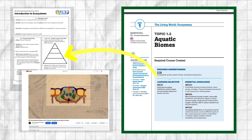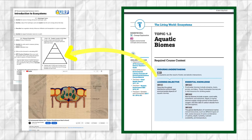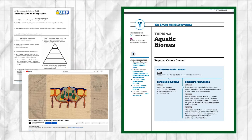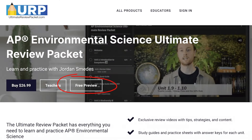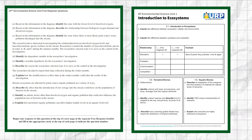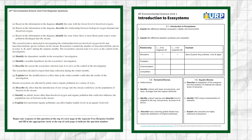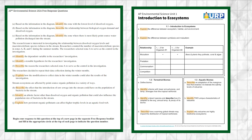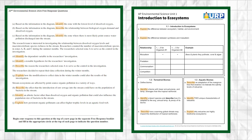luckily I've already gone through it and created a study guide and unit summary review video that covers all of the most important concepts in just 20 minutes for units one and two. The study guide is completely free, so head over to the Ultimate Review Packet and sign up for a free preview to grab your copy. What's so helpful about this study guide specifically is that all of the questions are written just like FRQs.